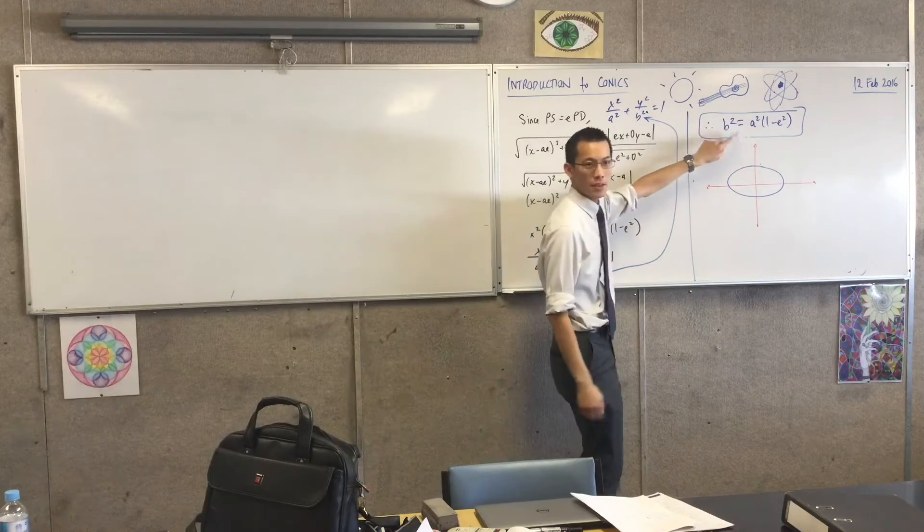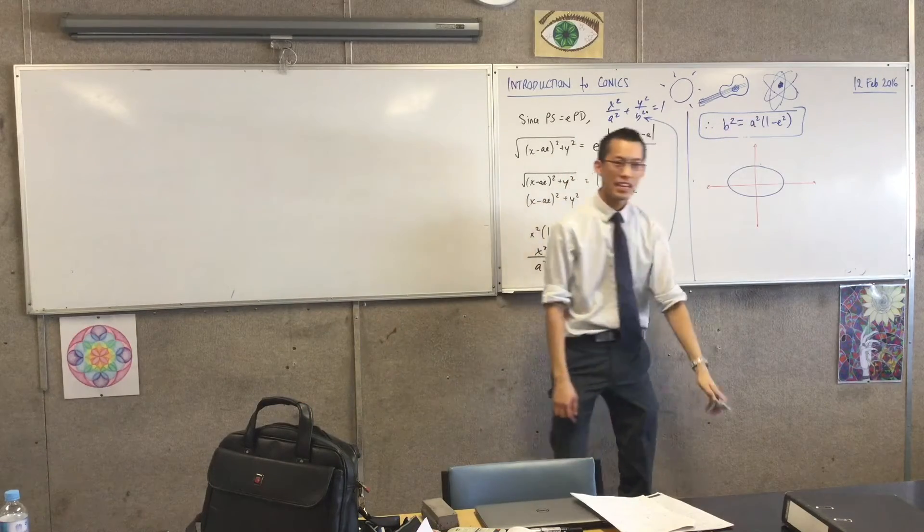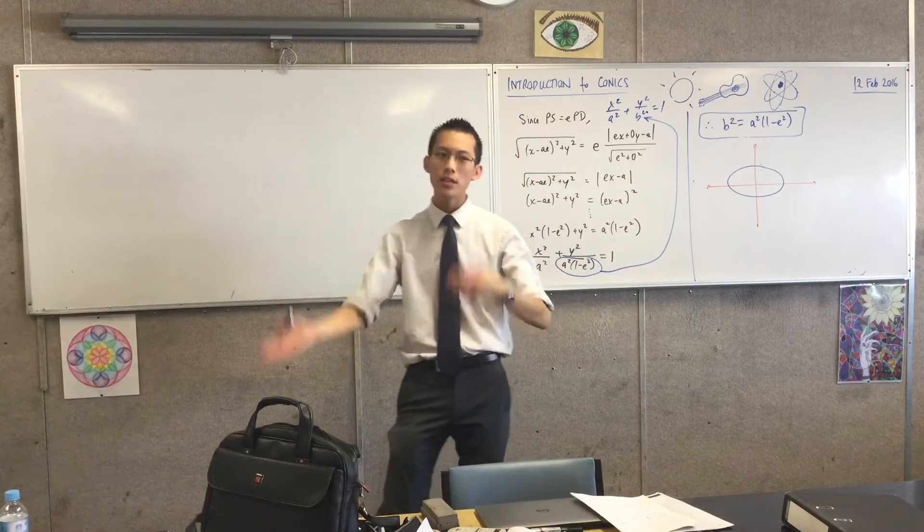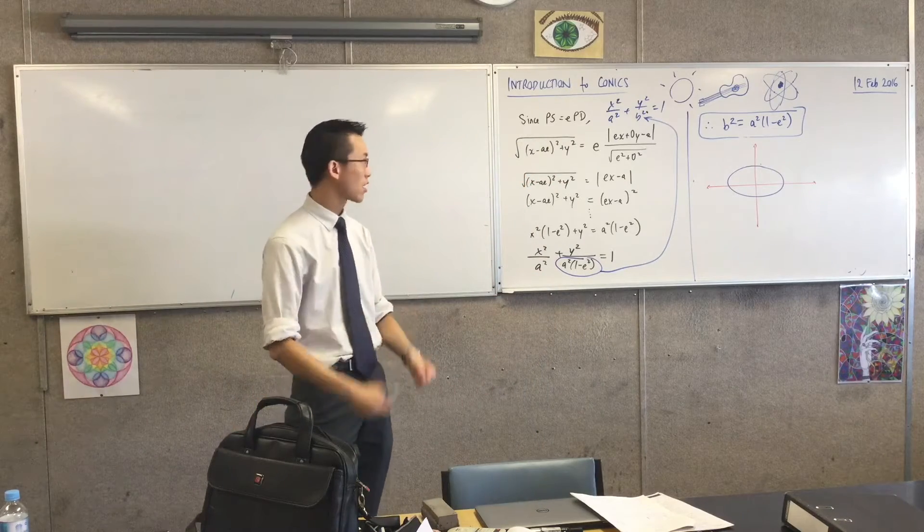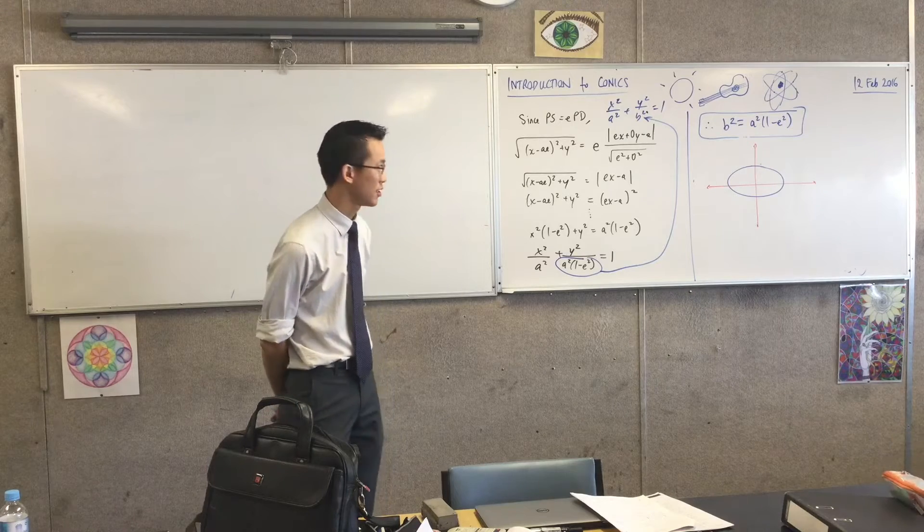I want to pull on this guy. Remember this guy? We put this big box around it. It is the relationship between A, B, and the eccentricity.